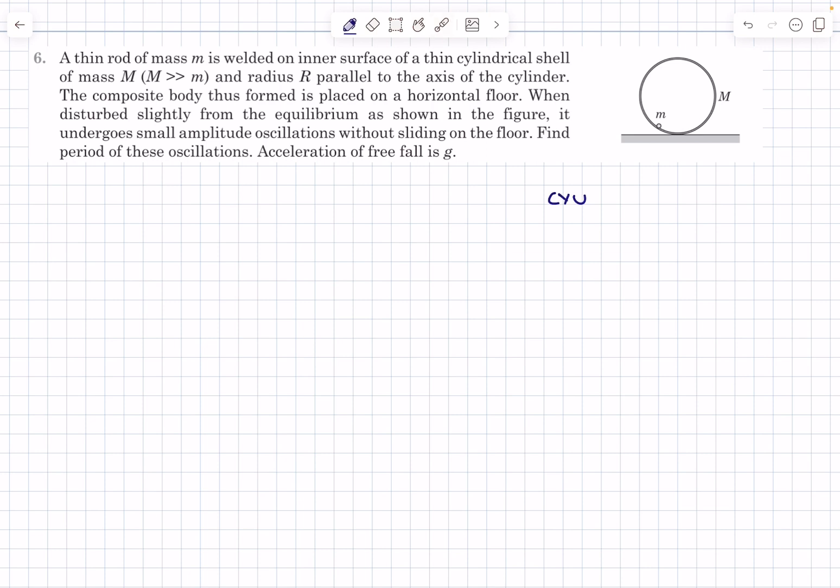Let's read the problem statement. We have a thin rod of mass m that is welded on the inner surface of a thin cylindrical shell of mass capital M. The mass m does not move relative to our shell. The composite body thus formed is placed on a horizontal floor. When disturbed slightly from equilibrium as shown in the figure, it undergoes small amplitude oscillations without sliding on the floor. We have to consider rolling without slipping here. The question is to find the period of these oscillations.